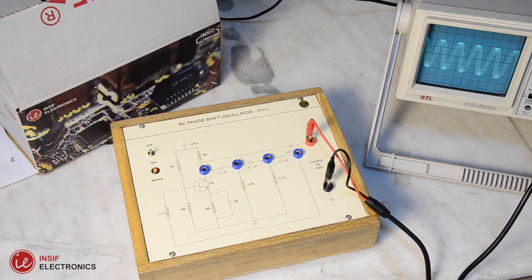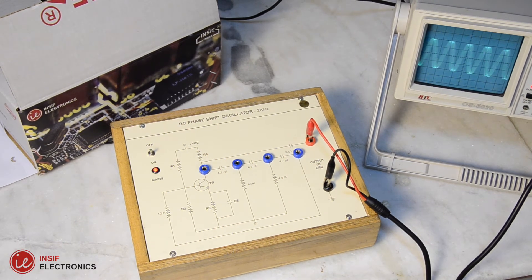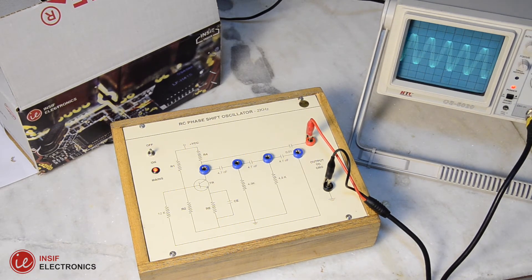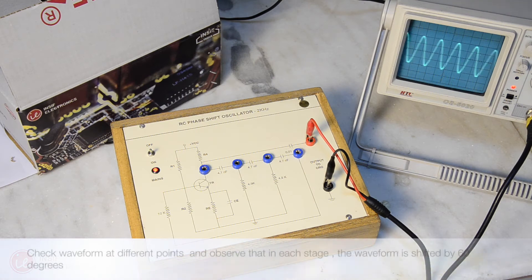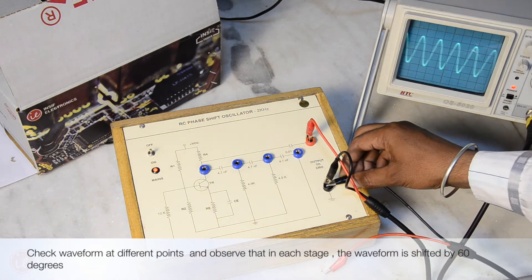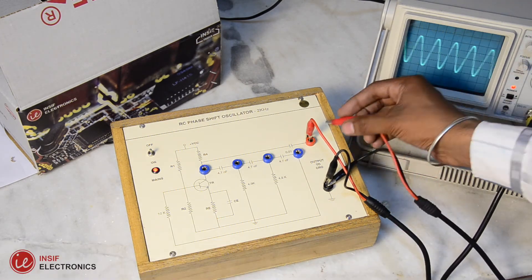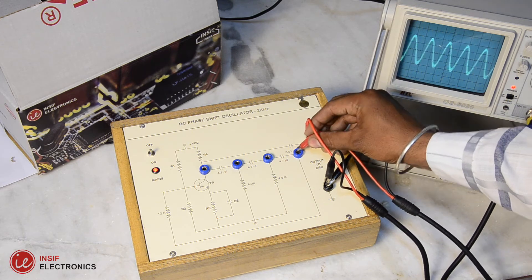And now see how the waveform is formed by RC circuit, phase shifting by 60 degrees in each stage. Check waveform at different points and observe that in each stage, the waveform is shifted by 60 degrees.